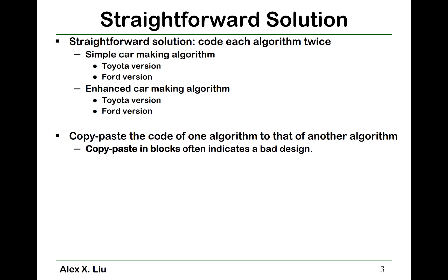So how to solve this problem? How to design such a system? The straightforward solution is that you program each algorithm twice. For example, for the simple car-making algorithm, you write it once for the Toyota variant — where your algorithm works with Toyota data — and you write the same algorithm again for the Ford variant. Similarly for the enhanced car-making algorithm, you write it once using Toyota data and again for Ford data. In such implementations, most of the code is exactly the same, except that you just replace the Toyota data with Ford data.